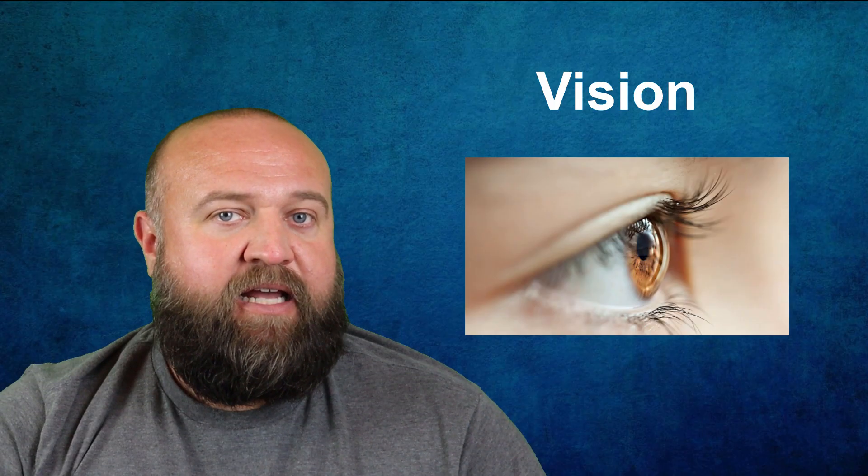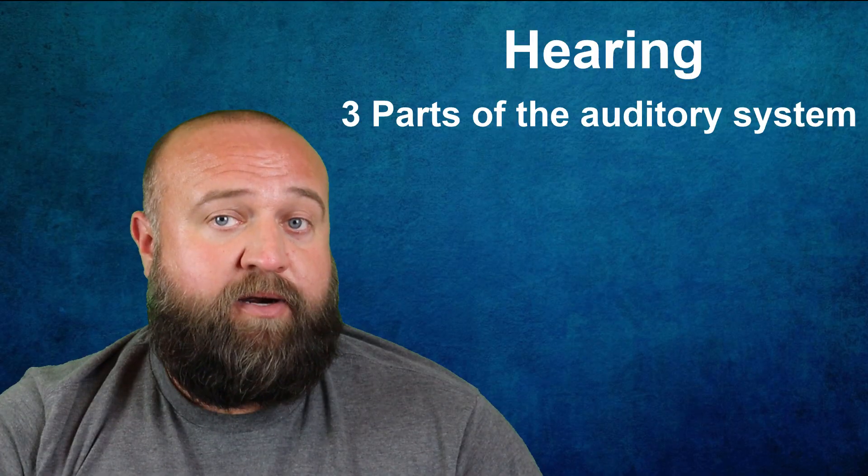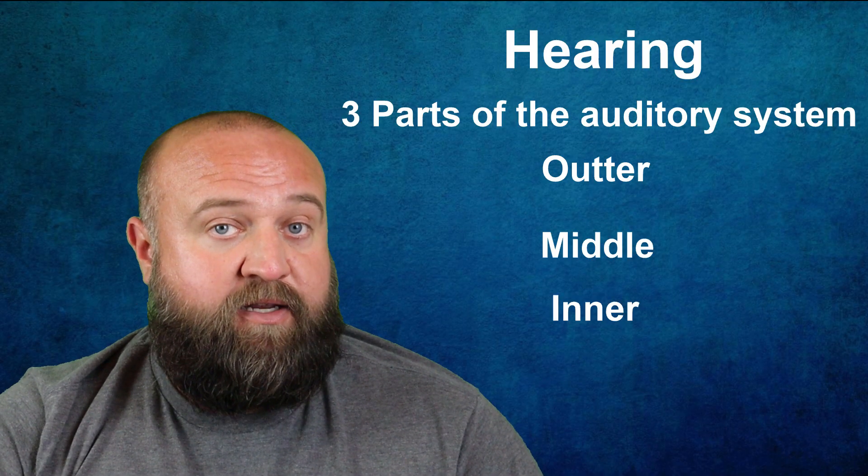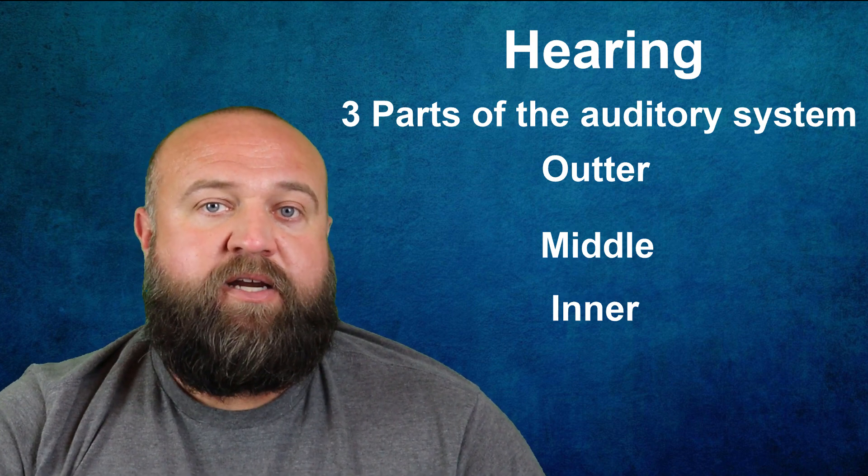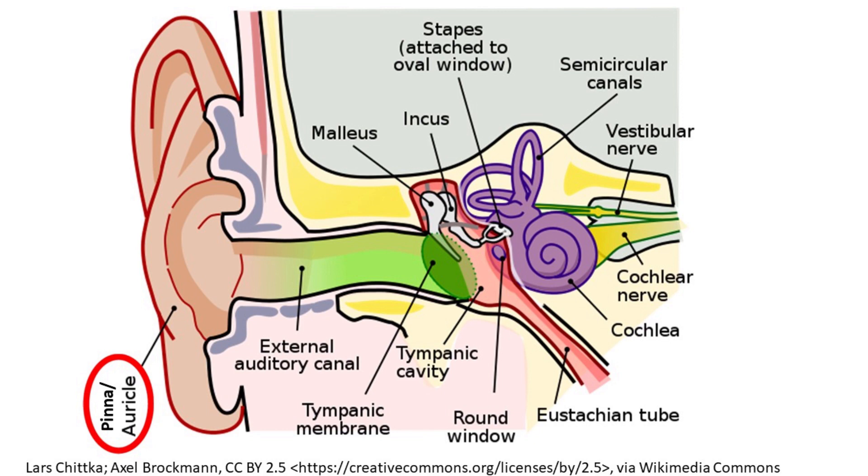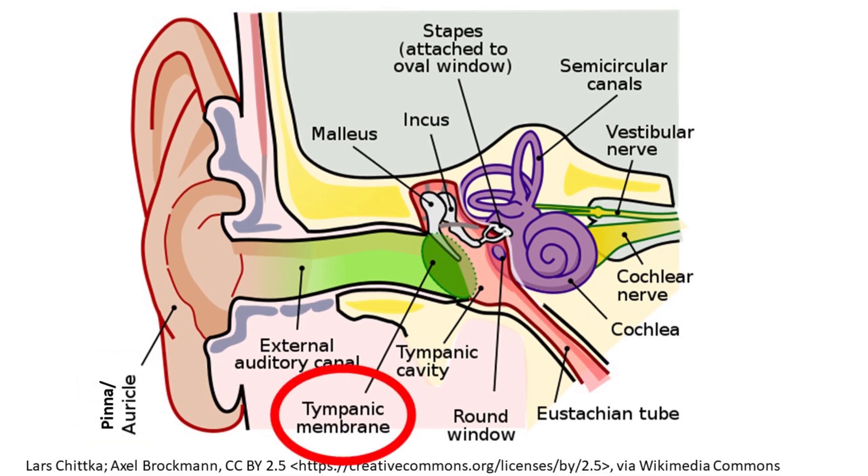I think that covers enough about vision so far, so let's move on and discuss hearing. Our auditory system is divided into three main parts: the outer, middle, and inner ear. The outer ear includes the visible part of your ear, also known as the pinna, as well as the ear canal and the tympanic membrane, or eardrum.